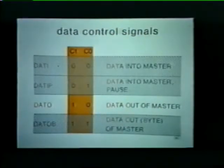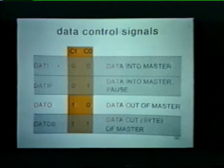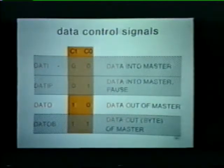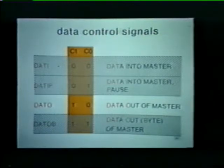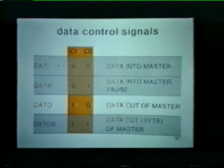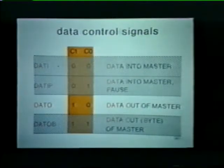Thus, if the master wants to store information in memory, it places a one and a zero on the control lines to select a Data O, causing data to be transferred out of the master and into the slave. Now we're going to look at the interlock dialogue that occurs during all data transactions.